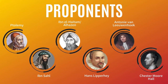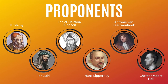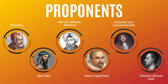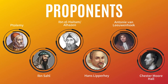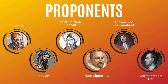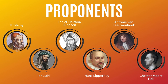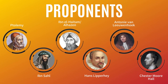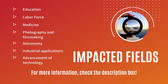Ptolemy and Ibn Sal paved the way for Ibn al-Haytham to write his notable book of optics about the properties of lenses. Hans Lippershey, other spectacle makers, and Antoni van Leeuwenhoek refined and improved the purpose of the lens through their inventions. Finally, Chester Moore Hall invented the achromatic lens.